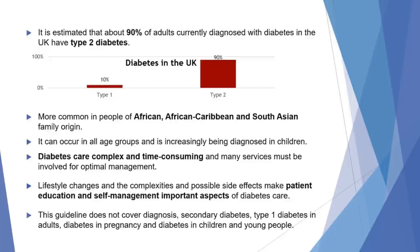This guideline contains recommendations for managing type 2 diabetes in adults and focuses on patient education, dietary advice, managing cardiovascular risk, managing glucose levels, and identifying and managing long-term complications. This guideline does not cover diagnosis, secondary diabetes, type 1 diabetes in adults, diabetes in pregnancy, or diabetes in children and young people.